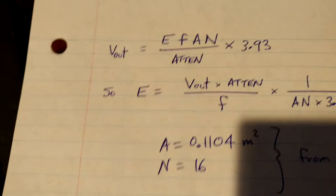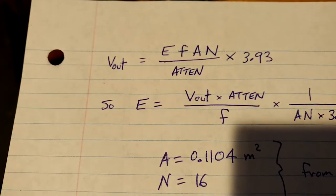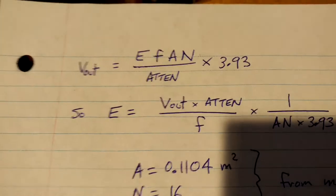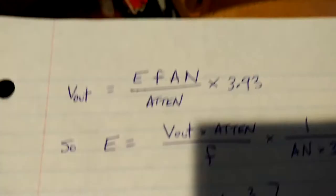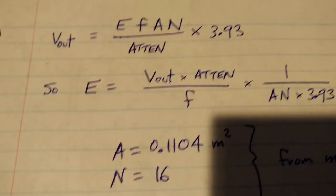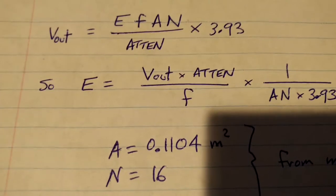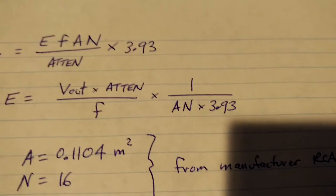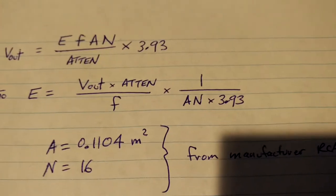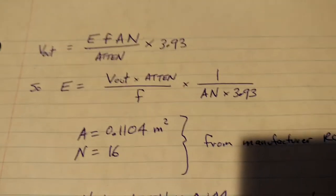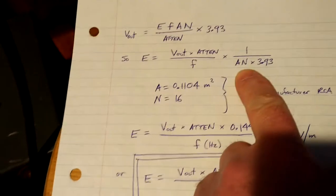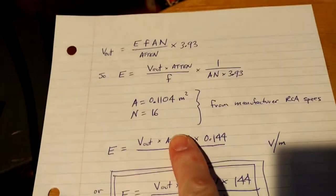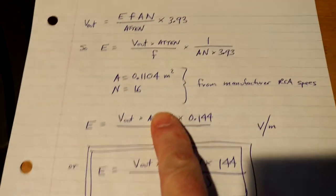So, E, taking E out, the electric field strength in volts per meter, is the reading on that meter, V out, times the attenuation factor that you are using, divided by the frequency that you're listening to, times 1 over A N, 3.93. So, the only constants here from the loop point of view for this particular loop is A N, the area of the loop and the number of turns. And these are given from the RCA data for this loop, from the manufacturer.